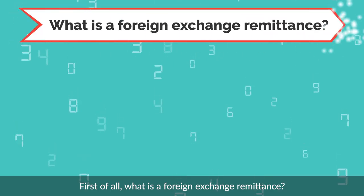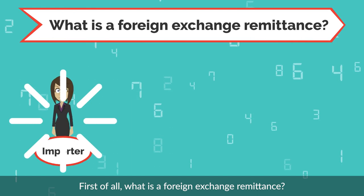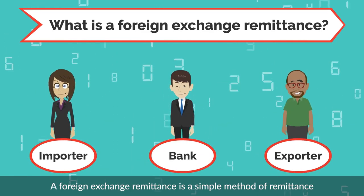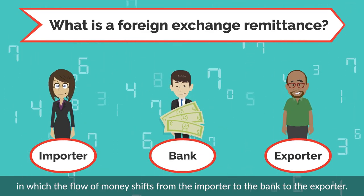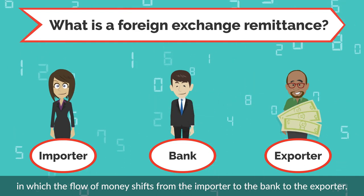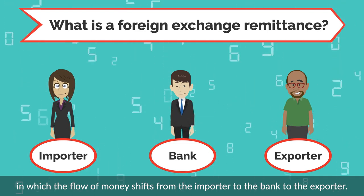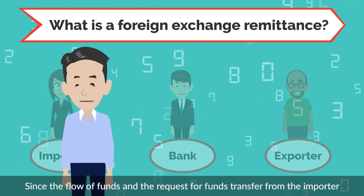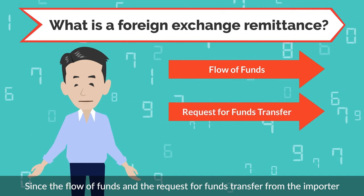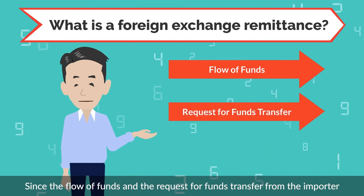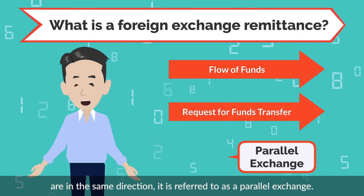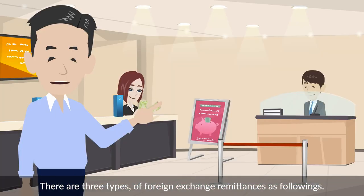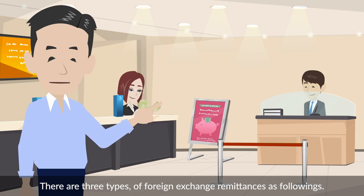First of all, what is a foreign exchange remittance? A foreign exchange remittance is a simple method of remittance in which the flow of money shifts from the importer to the bank to the exporter. Since the flow of funds and the request for funds transfer from the importer are in the same direction, it is referred to as a parallel exchange. There are three types of foreign exchange remittances.